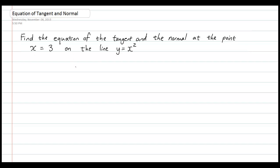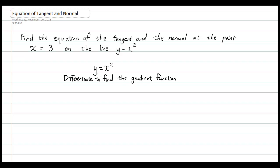We are going to solve this algebraically. The equation of the curve is y equals x squared. What we want to do is differentiate it to find the gradient function. This function will tell us the gradient of the tangent line at any point. From the first tutorial, differentiating an equation gives us an equation that describes the gradient, which is the same as the gradient of the tangent line. Differentiating y equals x squared gives y dash equals 2x.